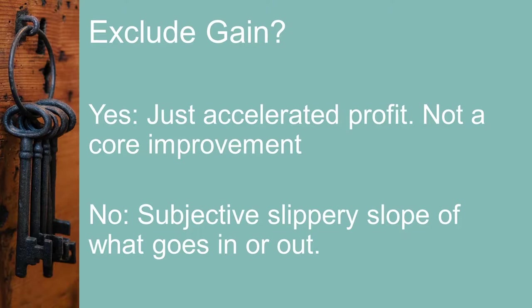A counter argument is that the gains were part of what the metric measured. It becomes a subjective slippery slope to start adding or subtracting things from the metric, especially when people's compensation is impacted by the metrics.